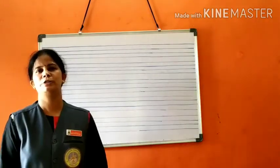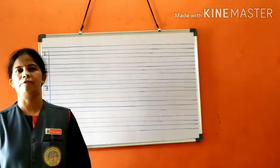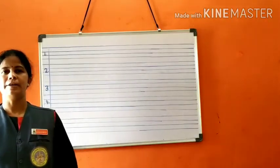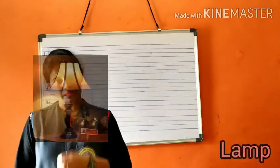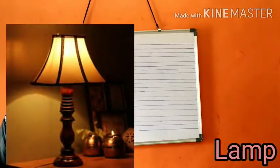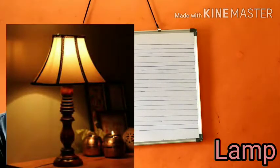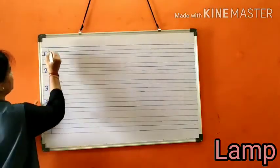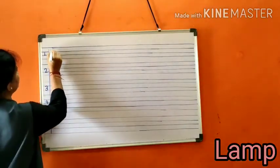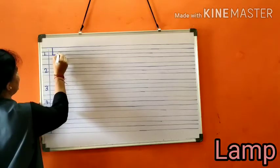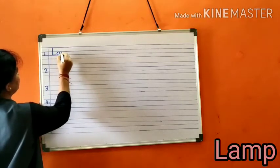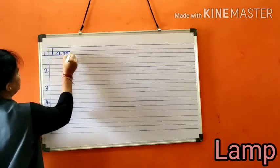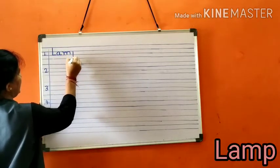Today we are going to learn L words. First word is lamp. L-A-M-P, lamp. Lamp means deeper. Shall we write the spelling of lamp children? L-A-M-P, lamp.